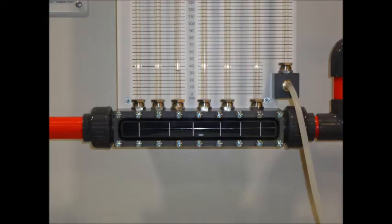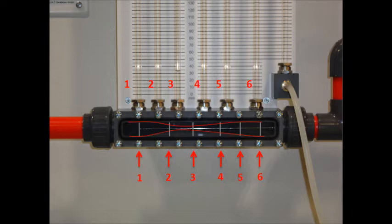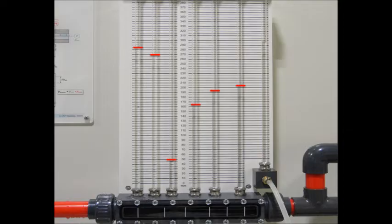The venturi apparatus acts as a constriction on the flow similar to the airplane wing example discussed earlier. As the cross sectional area decreases within the venturi, due to the theory of continuity, the velocity increases causing a drop in pressure. The first six piezometers from left to right measures the static pressure at six points along the constriction. Now record the heights of these six piezometers.